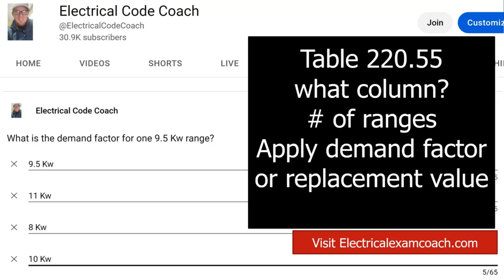Now that we've found what column we're working from, we're going to start on the left-hand side and find our number of appliances, then come across and tee off with that Column C value. So: what column am I in, find my number of ranges, then either apply your demand factor — which is columns A and B — or find your replacement value, which is in Column C. In this case, the answer is 8 kW.